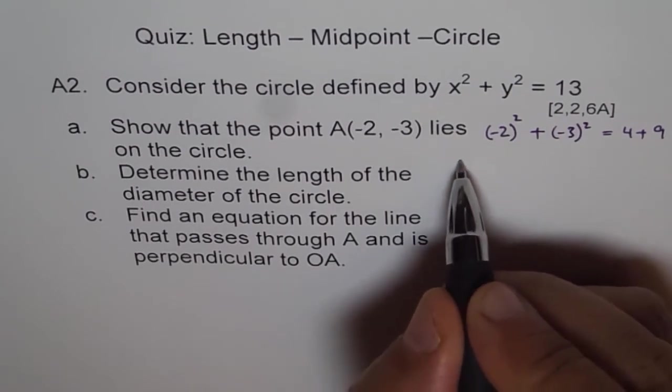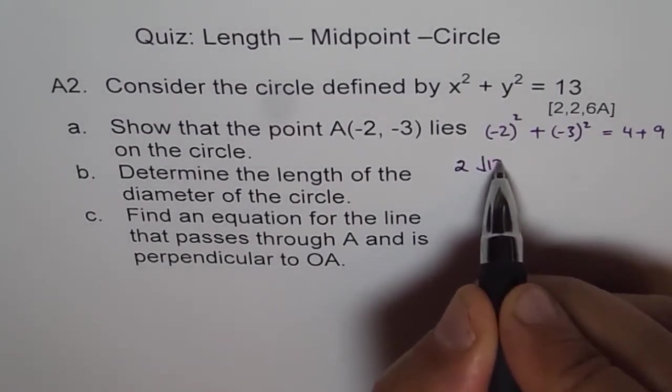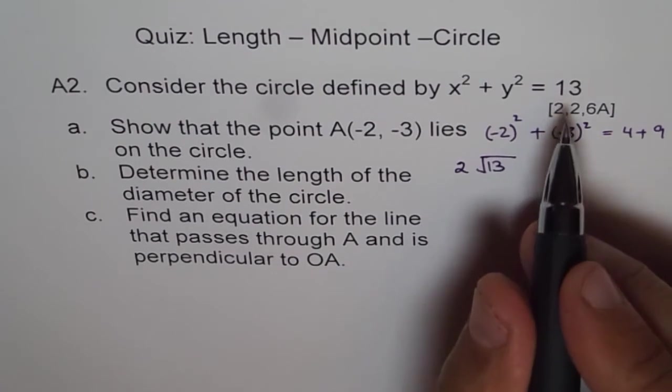And therefore, diameter will be 2 times square root of 13. Correct? So that is your answer. Don't put 13 there.